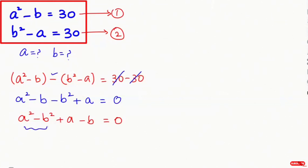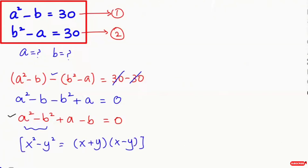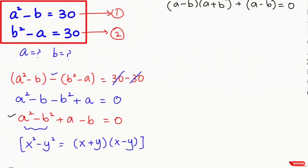Now I'm going to rearrange this as a squared minus b squared plus a minus b equals 0. Here I'm going to apply the algebraic identity x squared minus y squared equals (x + y)(x - y). This equation turns to (a - b)(a + b) plus (a - b) equals 0. Now I'm going to take the common factor (a - b), so (a - b)(a + b + 1) equals 0.